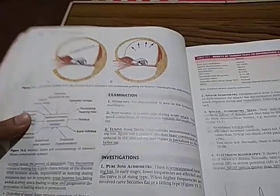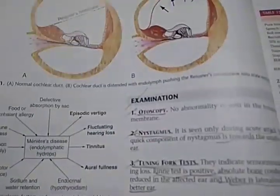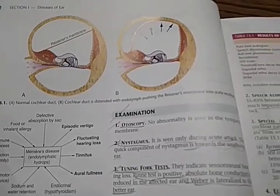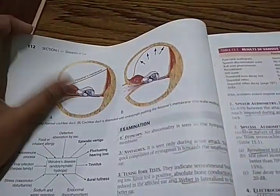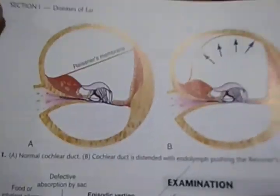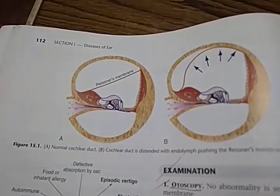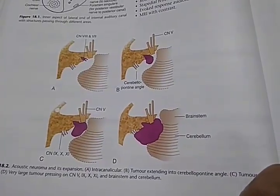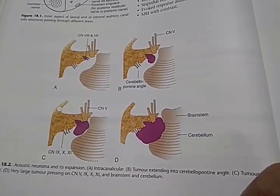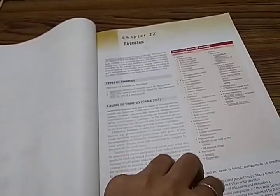Still in the ear — this is the normal cochlear duct and this is kind of swollen. This is the Reissner's membrane. Then tumours of ear and mastoid, acoustic neuroma and its expansion. There is a whole chapter on tinnitus and physiology.